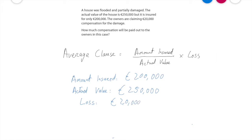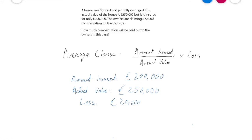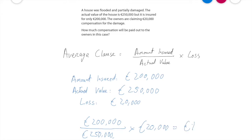Now that I've drawn the figures out of the question and listed them, I need to put them into the formula. So: amount insured €200,000 over actual value €250,000, multiplied by the loss of €20,000. Putting this into the calculator gives an answer of €16,000. That means this household will receive €16,000 from the insurance company for the damage, because they underinsured the property.